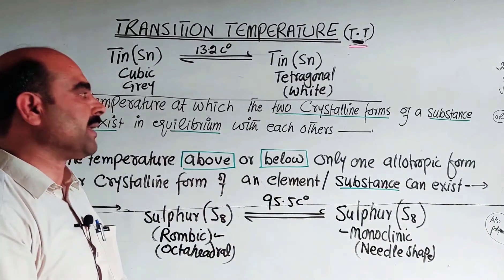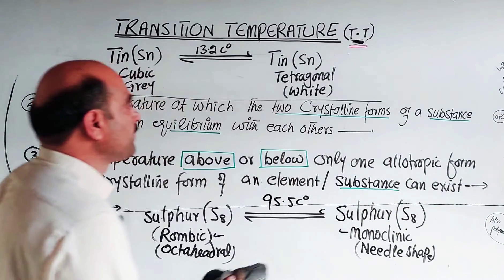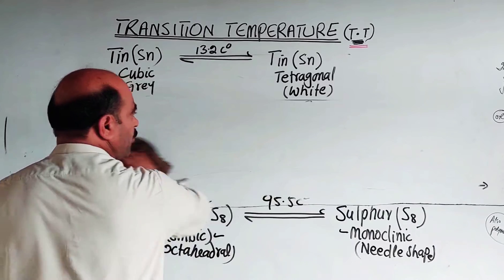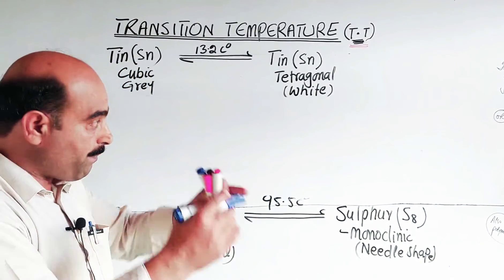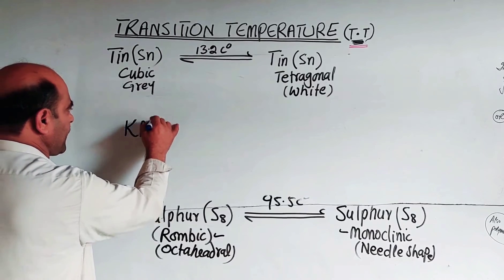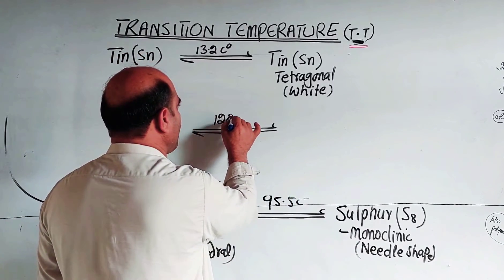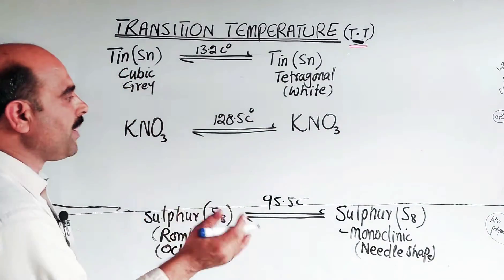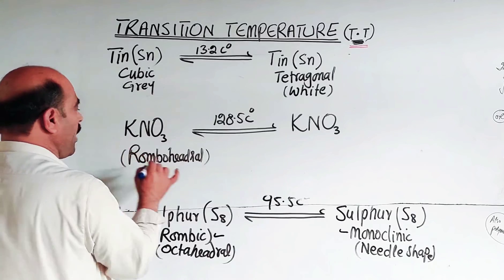Definition number two is clear: transition temperature is the temperature at which two crystalline forms of a compound co-exist in equilibrium. An example of a compound is potassium nitrate. Potassium nitrate is a salt that has two crystalline forms and a transition temperature of 128.5°C. The two shapes are rhombohedral and orthorhombic.